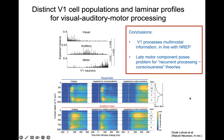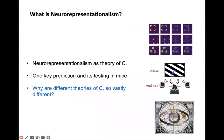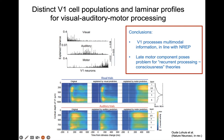The conclusions in line with NREP are that V1 processes multimodal information including motor, and that the late motor component poses a problem for recurrent processing-as-consciousness theories. It's not a problem for predictive processing, because there the motor inference copies are taken on board anyway to account for how predictions are shaped by motor movements, for instance eye movements that shape the predictions about what the animal is going to see next.